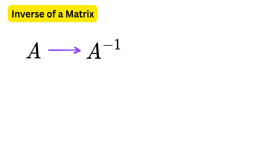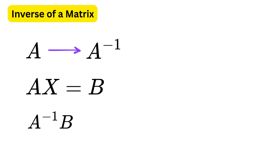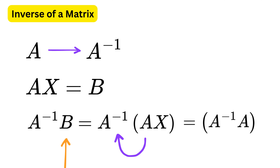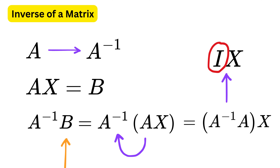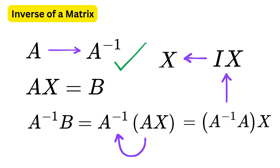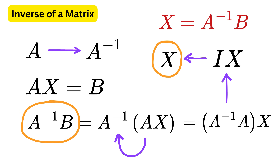The inverse is used to solve systems of linear equations, especially when written in matrix form like A times X equals B. So what will be the value of X? We can write A inverse times B equals A inverse times A times X, or I times X. The identity matrix doesn't change anything when multiplied, so I times X is just X. This means if we can find the inverse of matrix A, we can directly find the solution as X equals A inverse times B. We will talk about this in later videos.